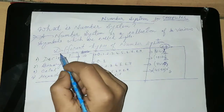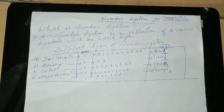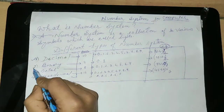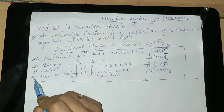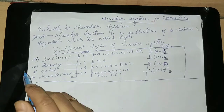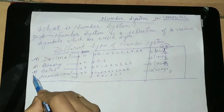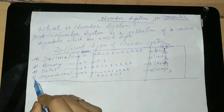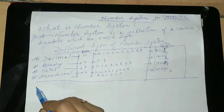So, at first, you see the decimal number system. Second, binary number system. Third, octal number system. And the last is hexadecimal number system.